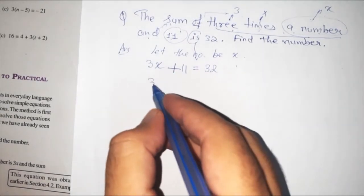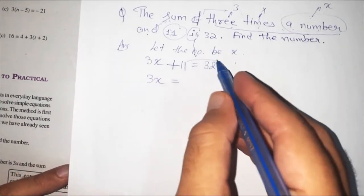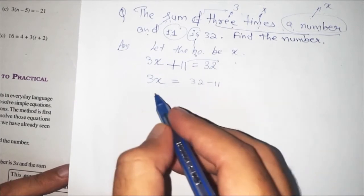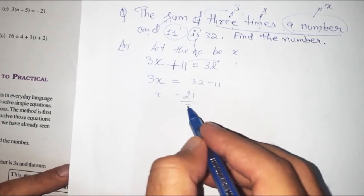So 3x now sum 11. So shifting 11 to the other side, 32 minus 11. X equals to, what will happen?